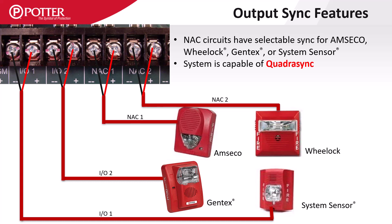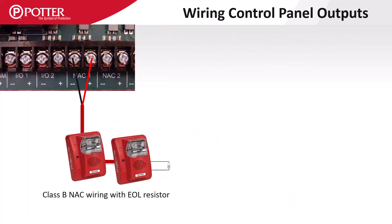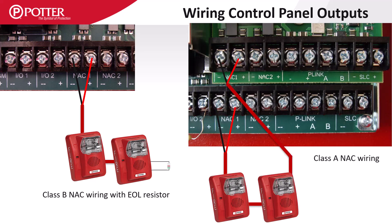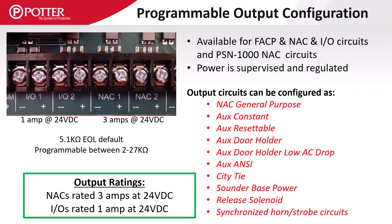The four strobe protocols supported are Amseco, Wheel Lock, System Sensor, and Gentex. Control panel output circuits can either be wired class B with an end-of-line resistor or in class A when using a class A card. In the Potter programming software, all panel NAC and I.O. circuits as well as PSN1000 NAC circuits can be set to provide the following functions.